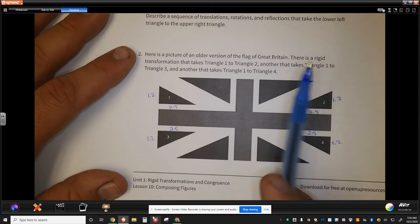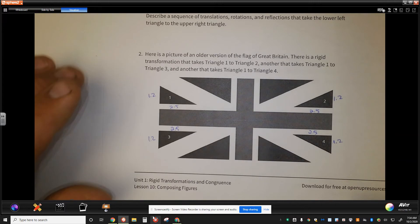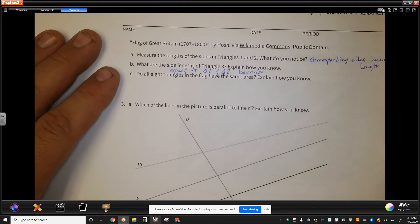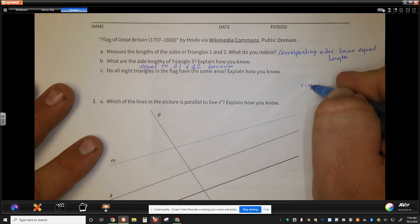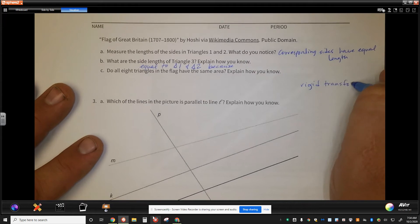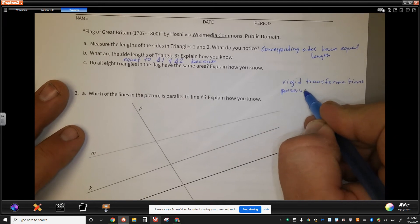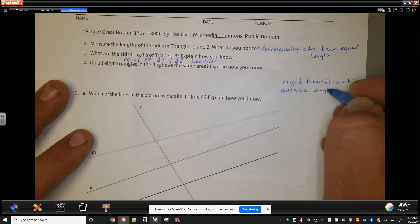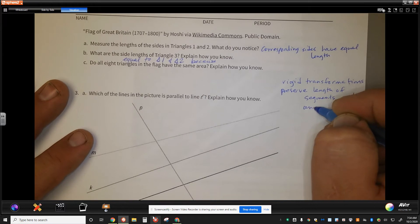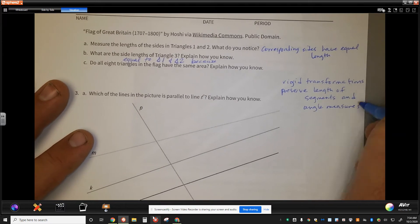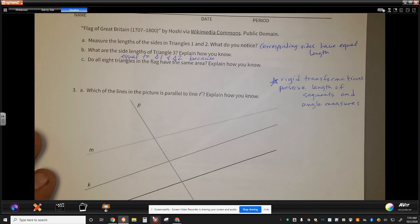I could reflect triangle 1 across a vertical line to get triangle 2. How do I know that all these angles are equal to each other? My explain how I know comes down to that exact same thing: rigid transformations preserve length of segments and angle measures. That's my big how do you know reason for all of these pieces. It says, do all 8 triangles in the flag have the same area? Explain how you know.